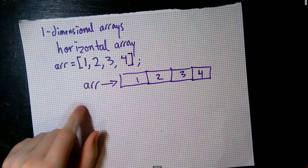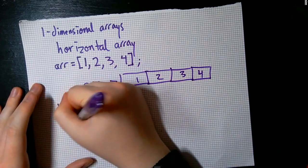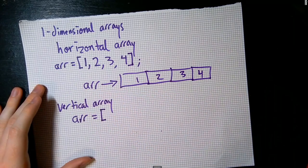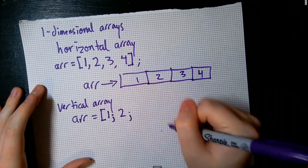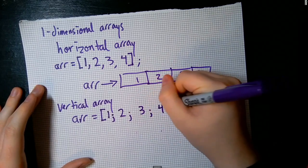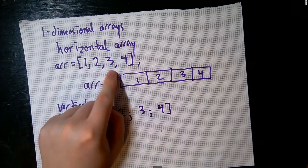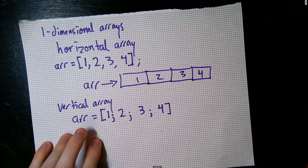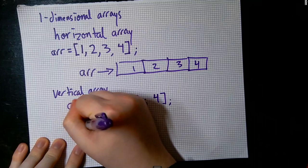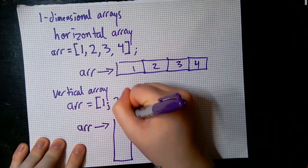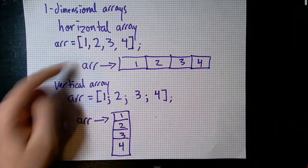For a vertical array, it's very similar. We say R equals, open square bracket, then put in our values separated by semicolons: 1; 2; 3; 4, then close bracket. Note that there's no semicolon needed after the last element — we only use semicolons to separate values inside the array. Put a semicolon after the closing bracket so MATLAB doesn't bombard us with output. Now R points to a vertical stack of boxes containing 1, 2, 3, and 4. That's the difference between setting up a horizontal array and a vertical array.